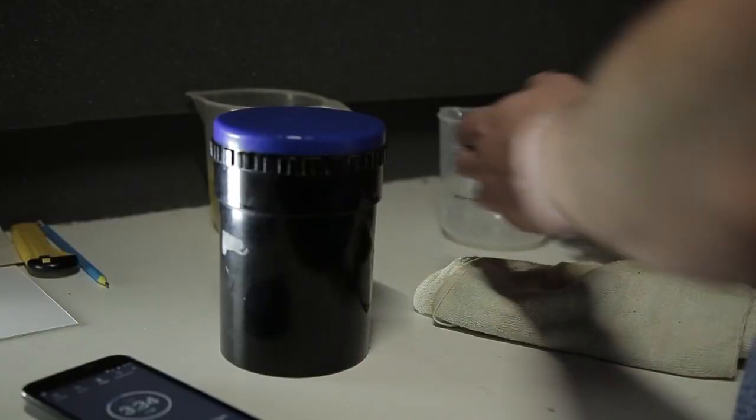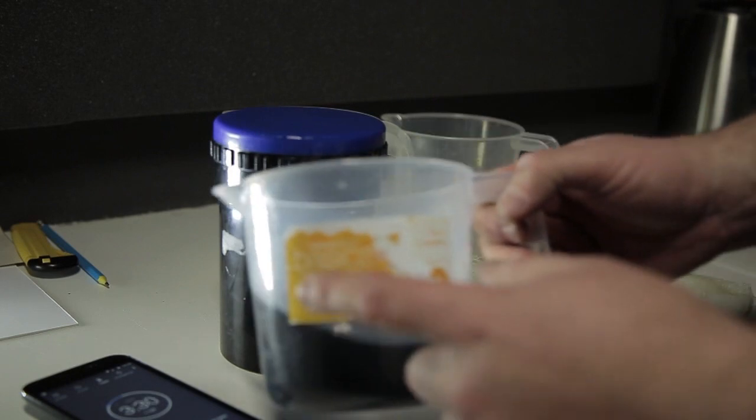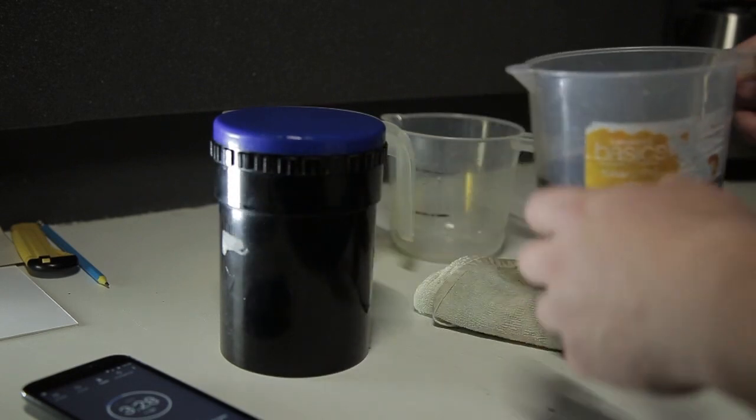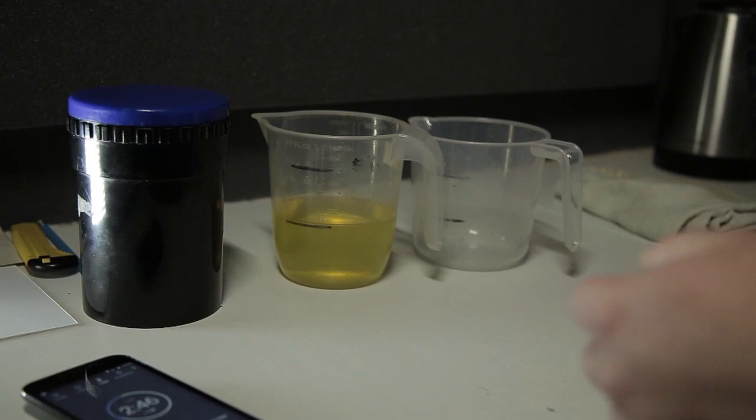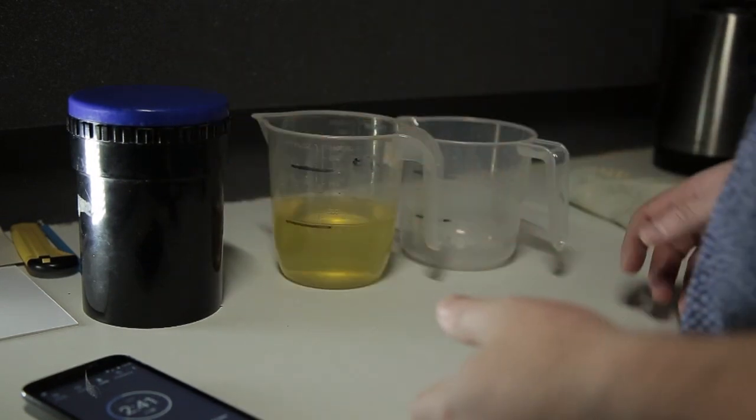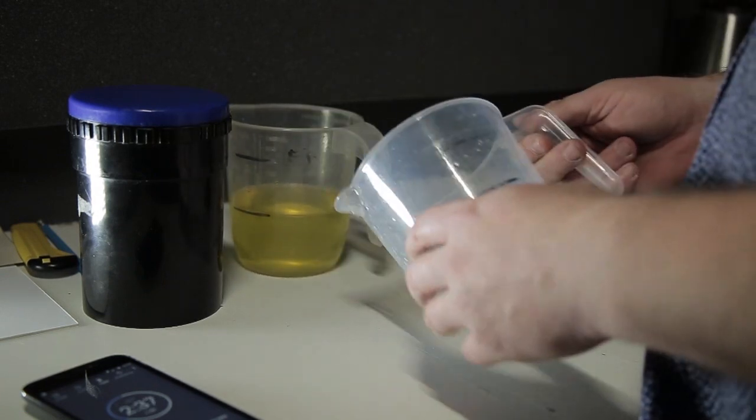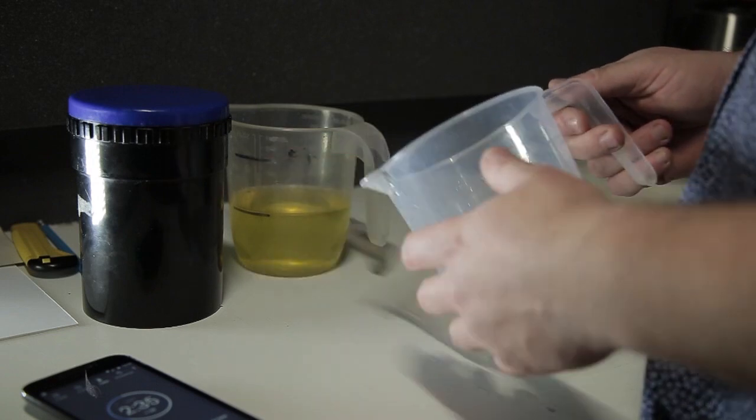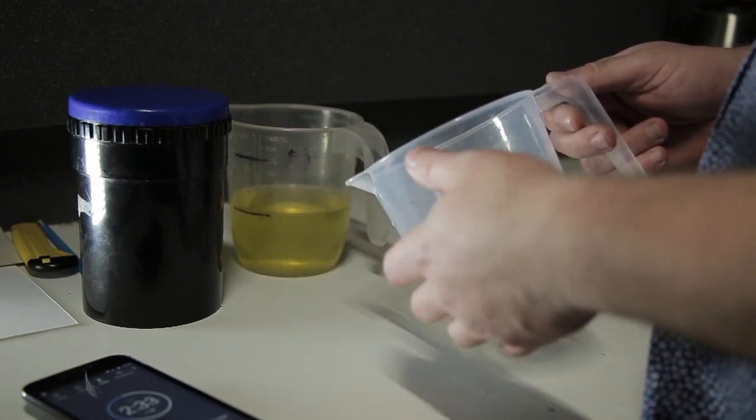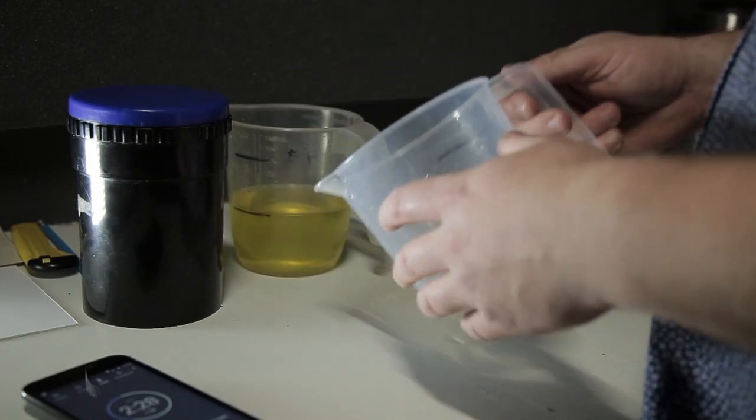And the fixer, you know, you can reuse the stop bath and you can reuse the fixer but the development has got to go. That's like nasty. So the stop bath and the fixer can be reused and re-bottled and you still know when it starts getting exhausted. Not so much the stop but the fix, you'll take the film out after five minutes, four minutes, whatever and it hasn't been fixed properly. Just put it straight back in again and it'll just go longer and longer. But when that happens, generally you know it's time to replace the fixer.